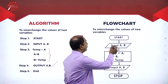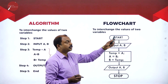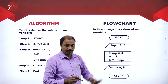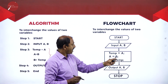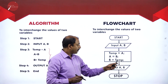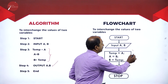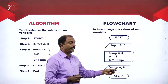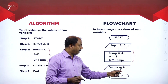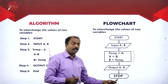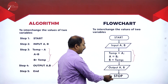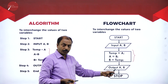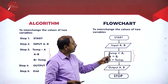Now let us see the flowchart. We start with an oval shape to begin the flowchart. Next is input — we input the values of two variables a and b using a parallelogram. Then comes the logic: temp = a, a = b, and b = temp. This is processing, shown in a rectangle. After processing we output — printing the final interchanged values of a and b — and then we stop the flowchart using an oval. So the oval represents beginning and end, the parallelogram represents input and output, and the rectangle is processing.